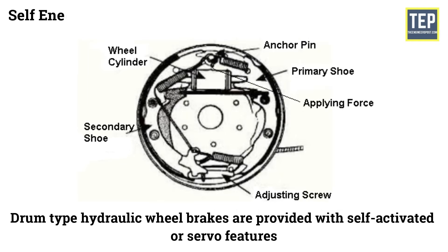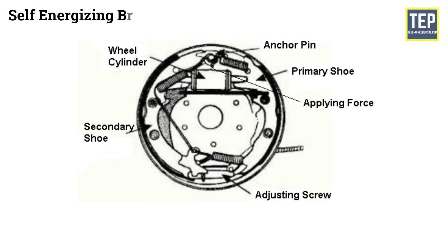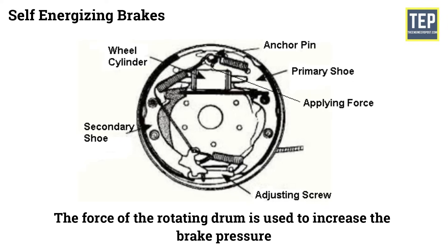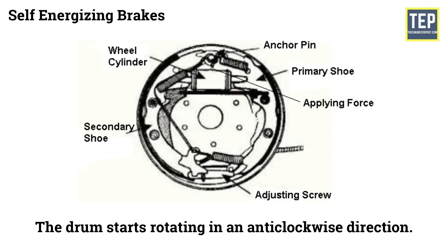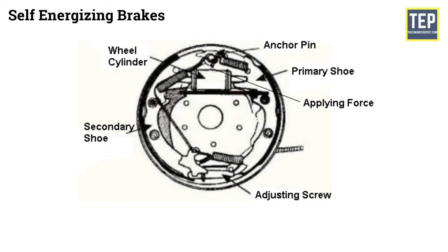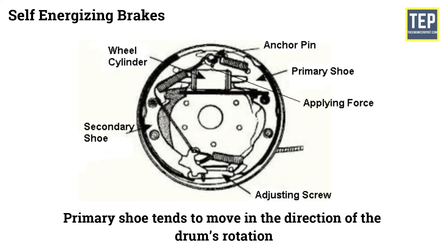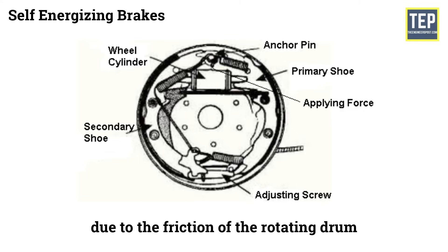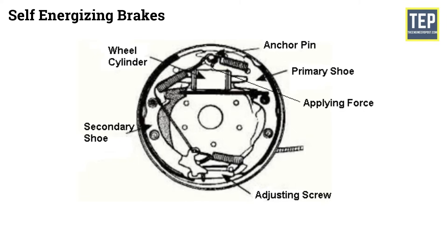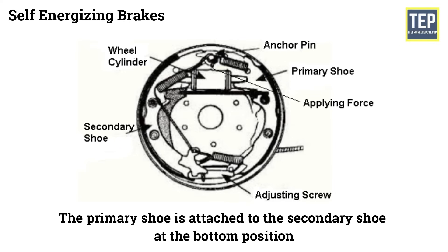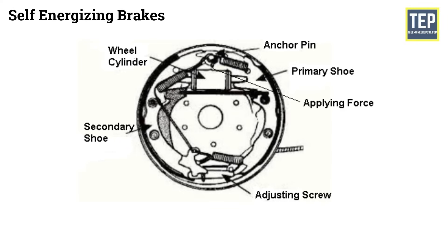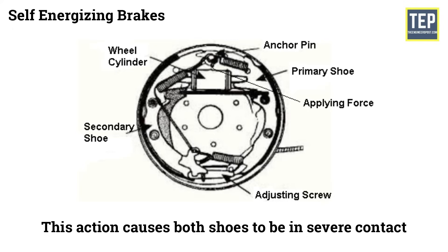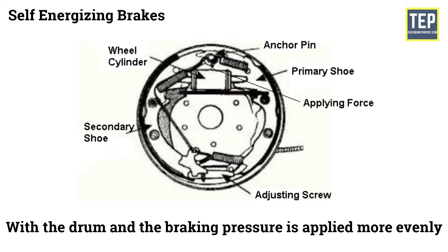Self-energizing brakes. Drum type hydraulic wheel brakes are provided with self-activated or servo features, in which the force of the rotating drum is used to increase the brake pressure. When the vehicle is traveling forward, the drum starts rotating in an anti-clockwise direction. When the brakes are applied, the primary shoe tends to move in the direction of the drum's rotation due to friction. Because the primary shoe is attached to the secondary shoe at the bottom, the secondary shoe is forced against the anchor pin located at the top. This causes both shoes to be in severe contact with the drum and the braking pressure is applied more evenly.